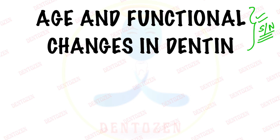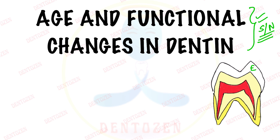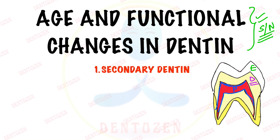As changes are happening in the overlying enamel, the function of protection is taken over by the underlying dentine. Dentine will protect the pulp by forming more dentine on the inside of the pulp, which will form a barrier and prevent anything from coming inside. This type of dentine formation is known as secondary dentine.